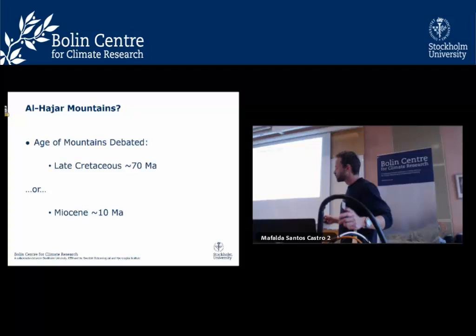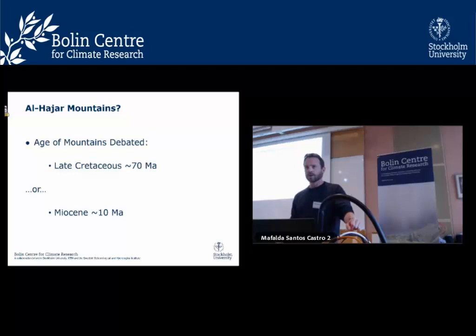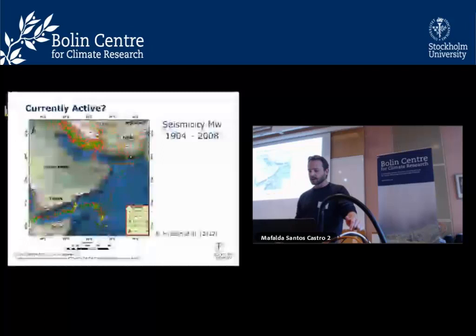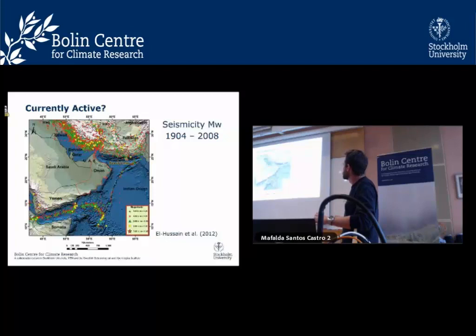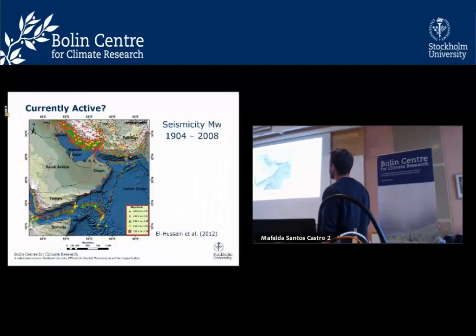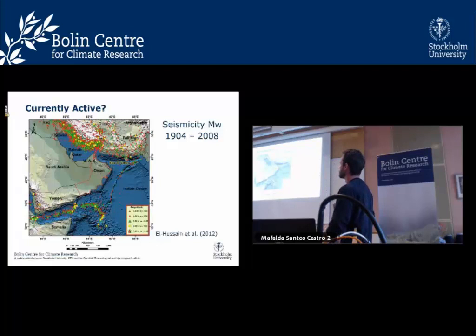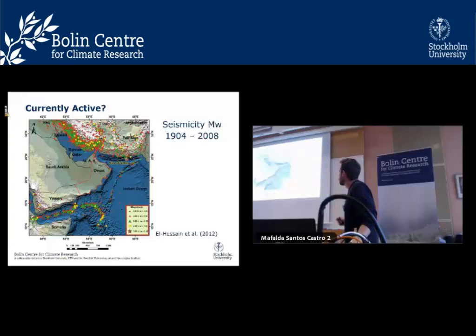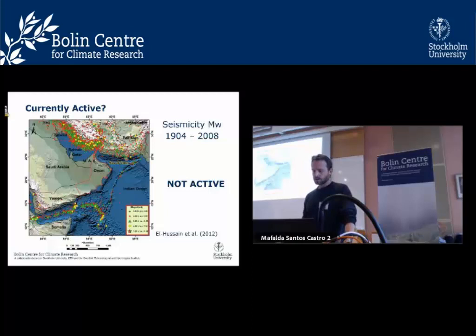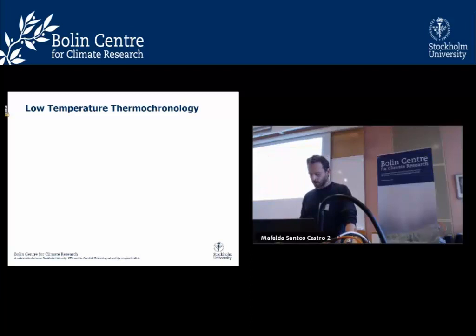I started my PhD to nail down the timing of the mountain uplift. The first question is: are they currently active? Looking at seismicity over the last 100 years, Arabia is moving north into Eurasia at about 2–3 centimeters per year. However, the mountain range in Oman shows very low seismicity and an absence of faulted Quaternary gravels. We conclude that whatever formed the mountains, it is not an active process today. We use low-temperature thermochronology to understand the timing and rates of uplift.